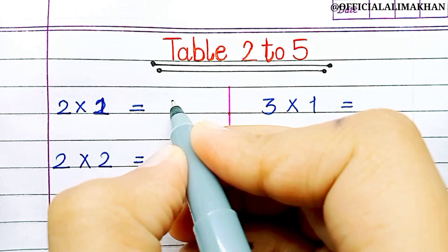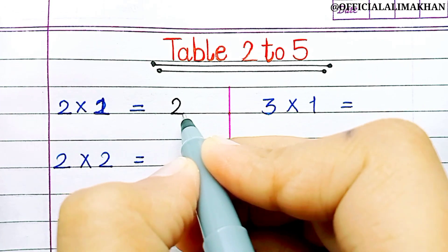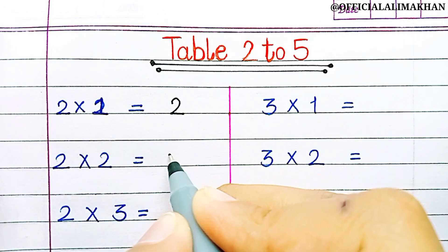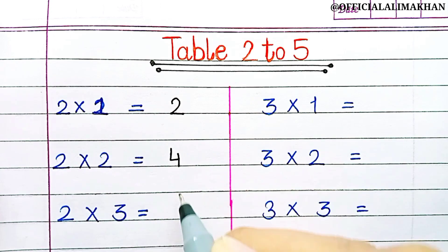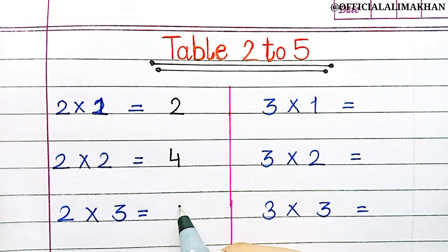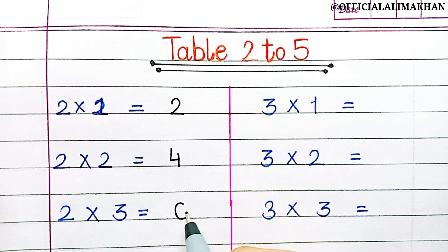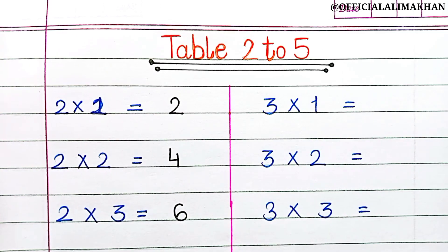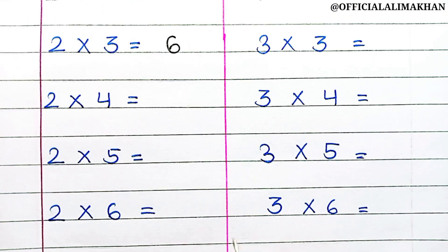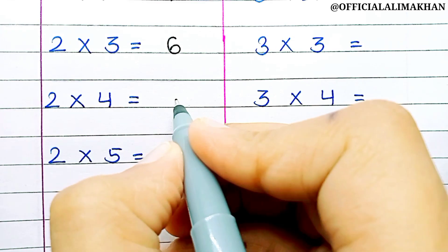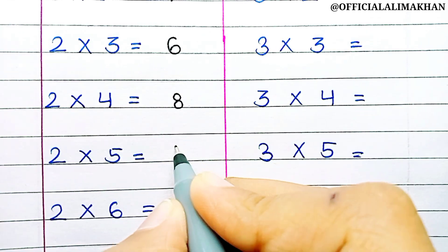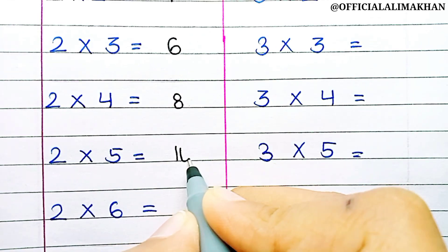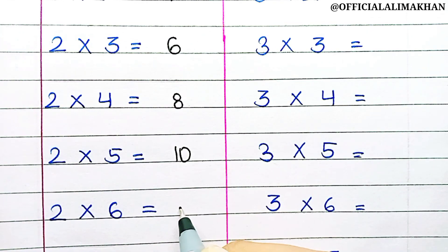2 1s are 2, 2 2s are 4, 2 3s are 6, 2 4s are 8, 2 5s are 10.